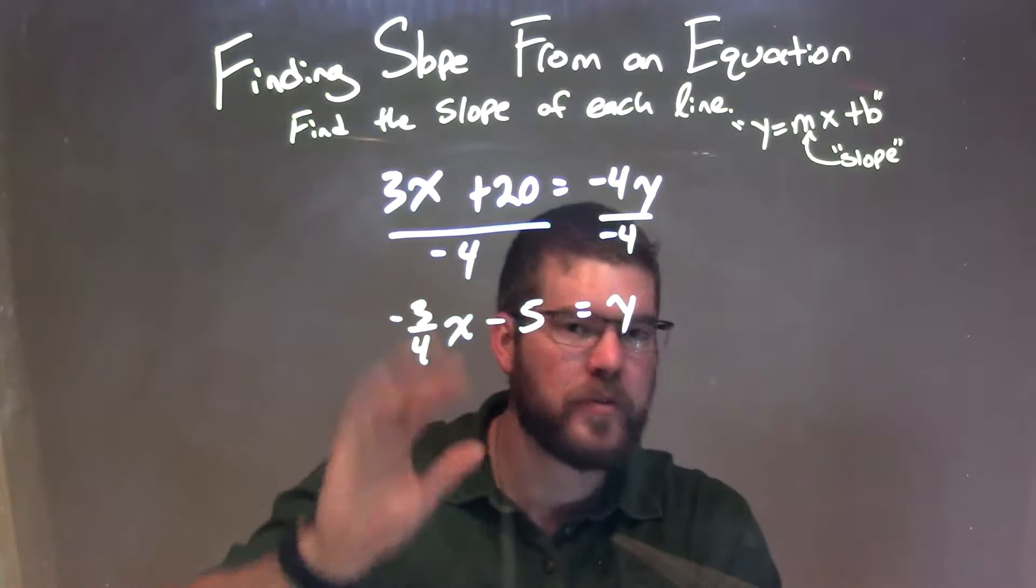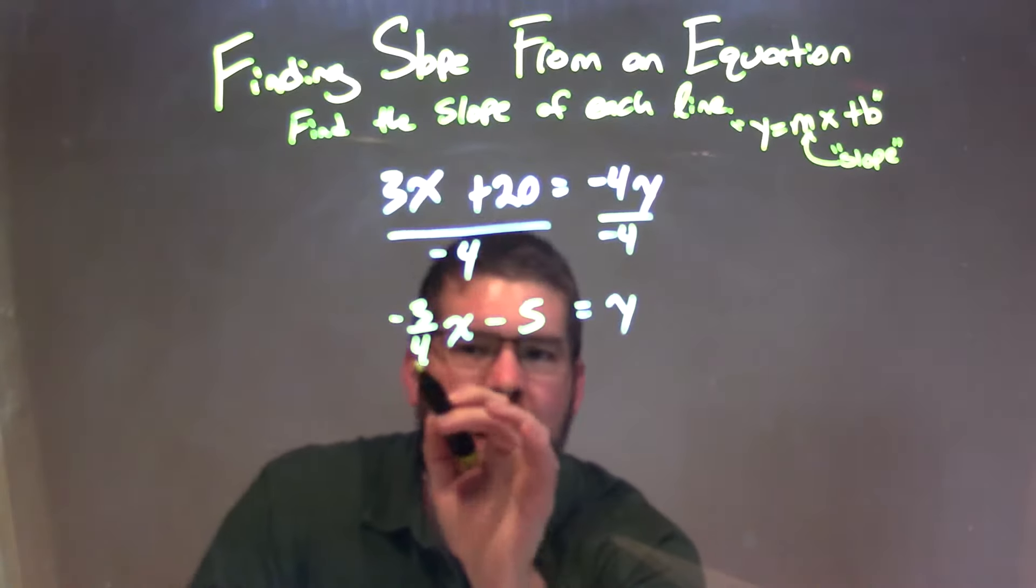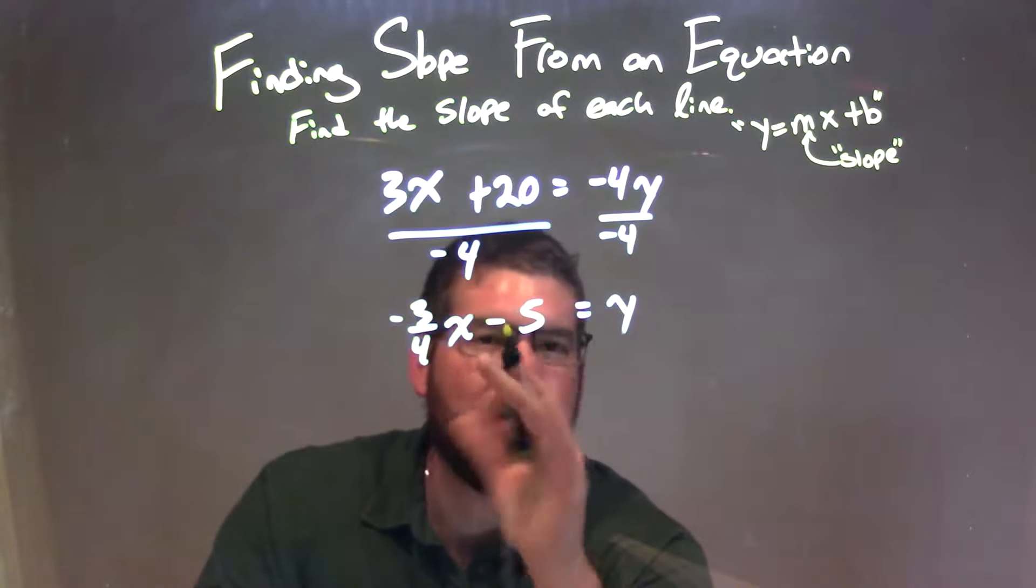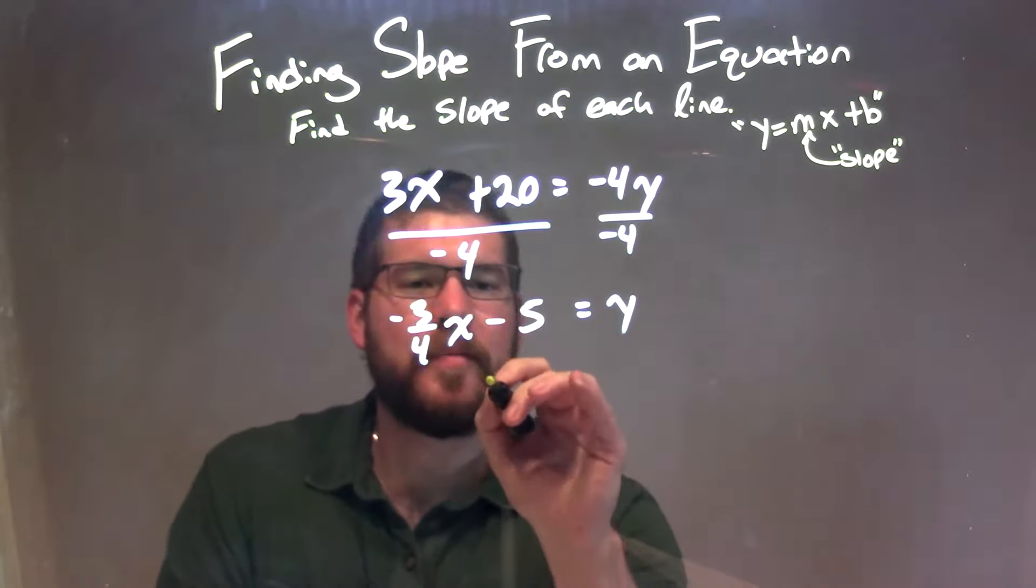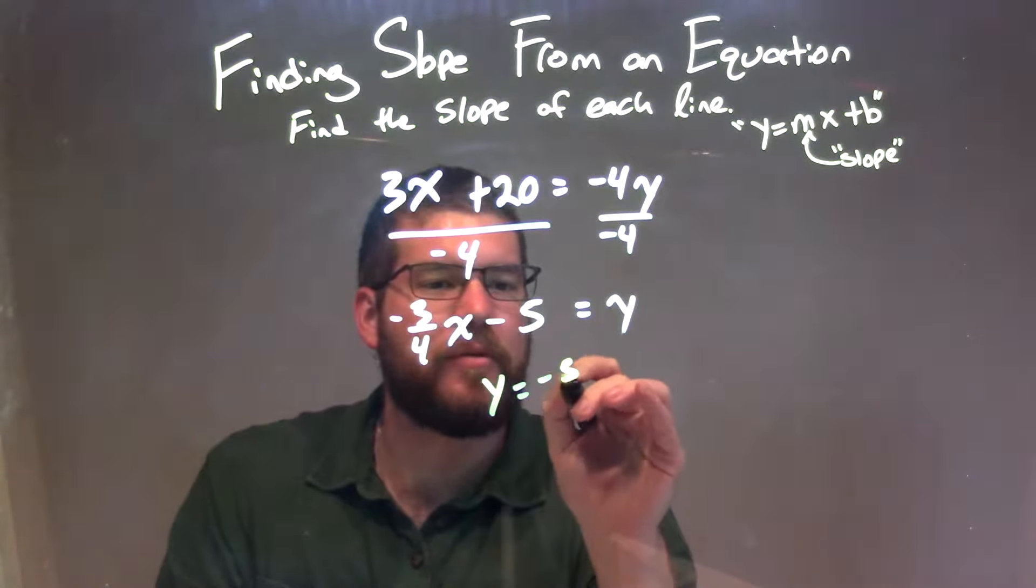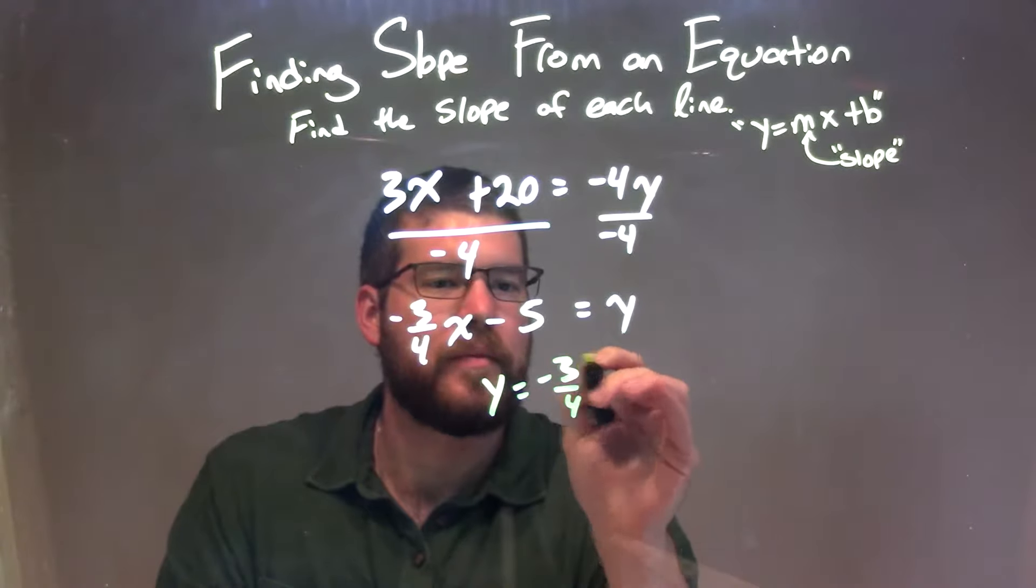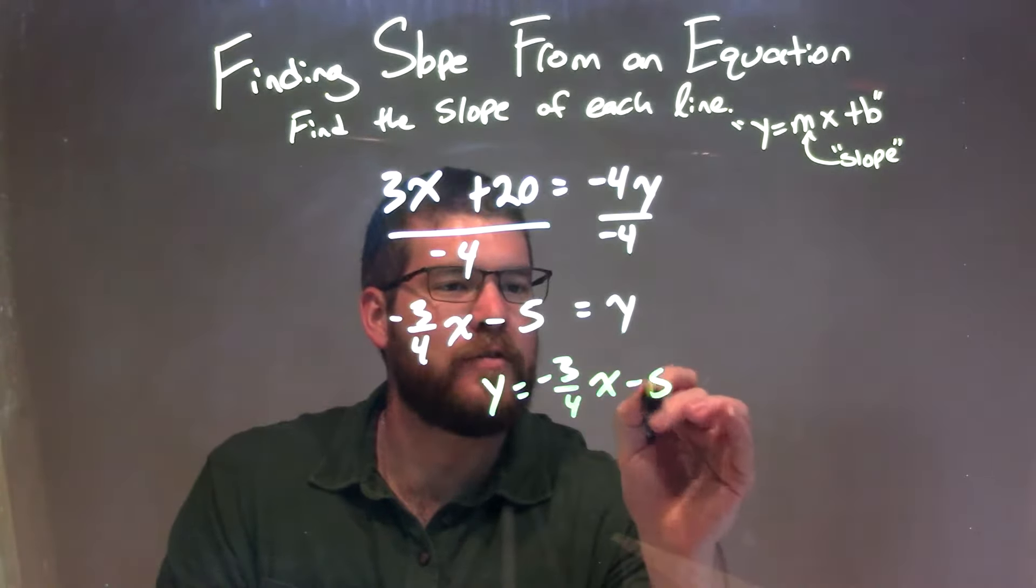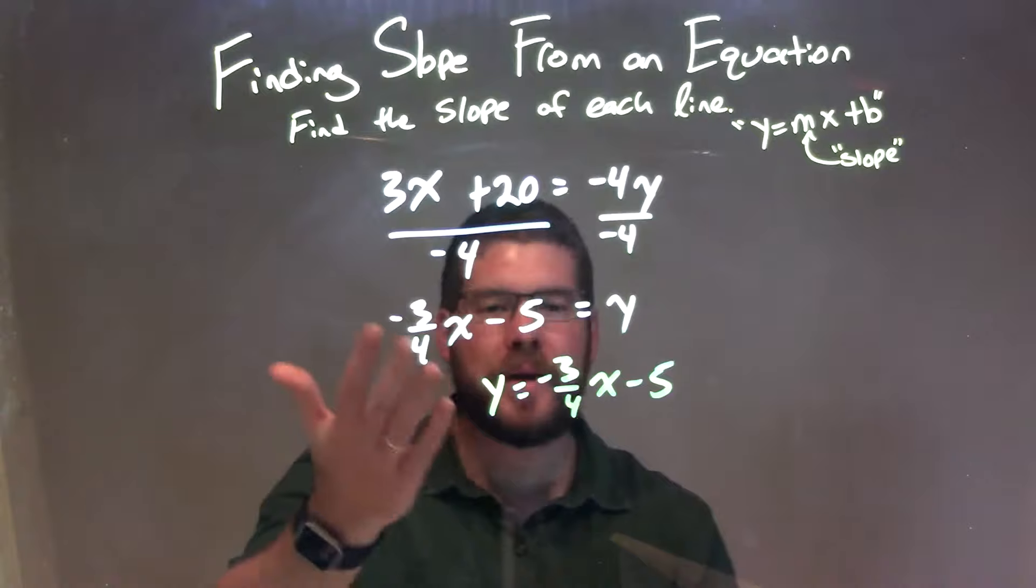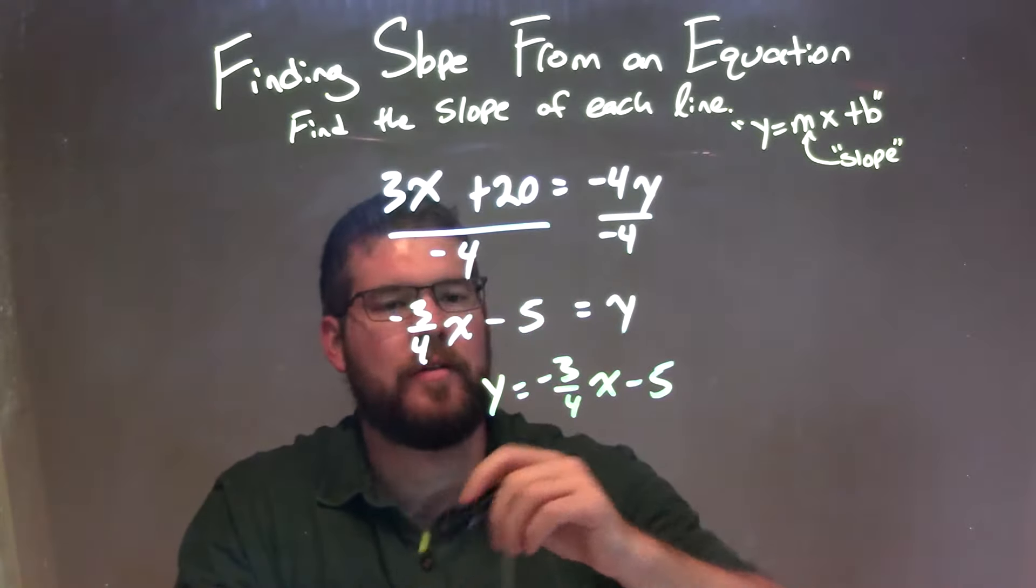Hopefully, if you're good at this, you can see that the m value is negative 3 fourths. But if you need to see y written first, we can just flip everything at this point. And we have y equals negative 3 fourths x minus 5. So we kind of flip everything. And now we can more easily see that's in slope intercept form.